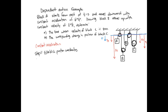Now we establish the constraint equations. In this case we have two ropes. We have one rope that goes from A around B and finishes at D. The length of the blue rope is going to be the position of xA plus the position of xB, plus this last piece which is xB minus xD. That equals length one, the length of the first rope.